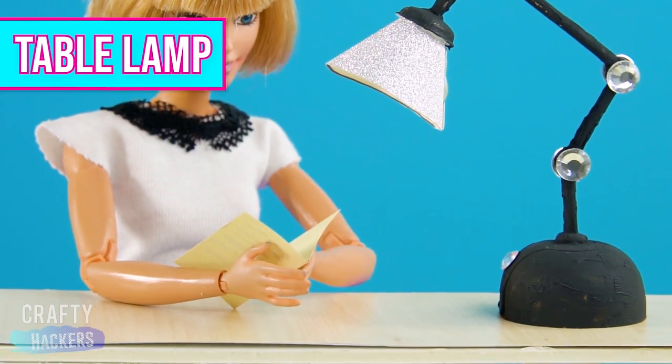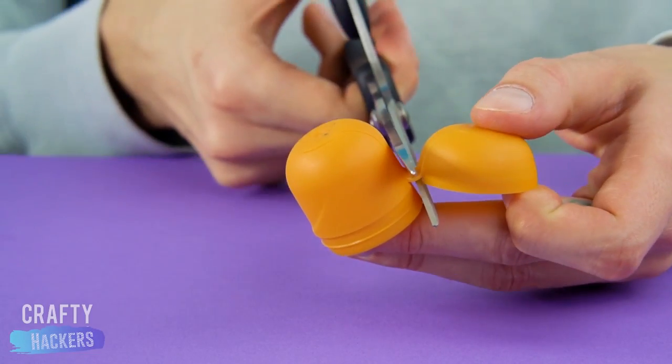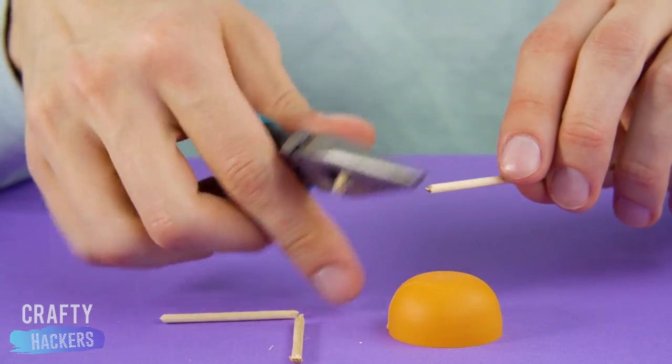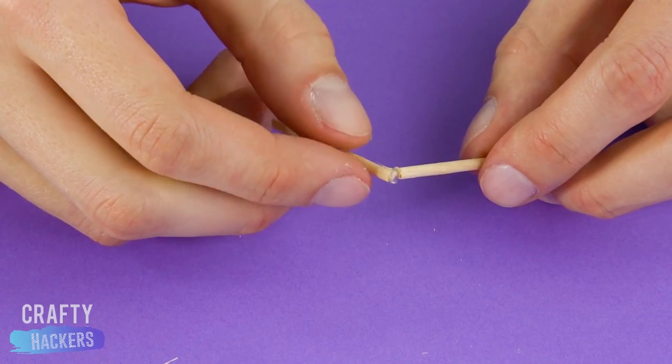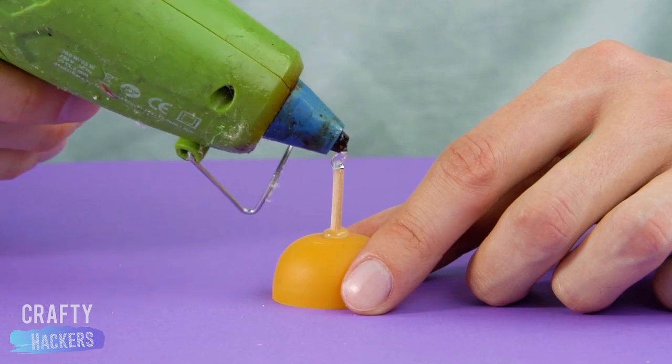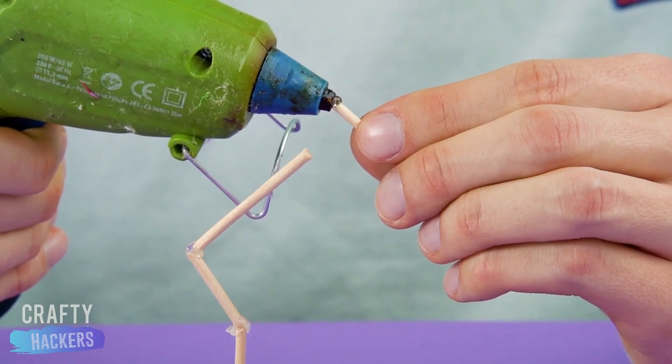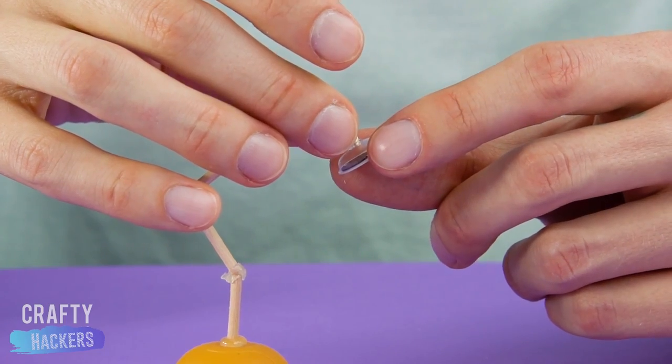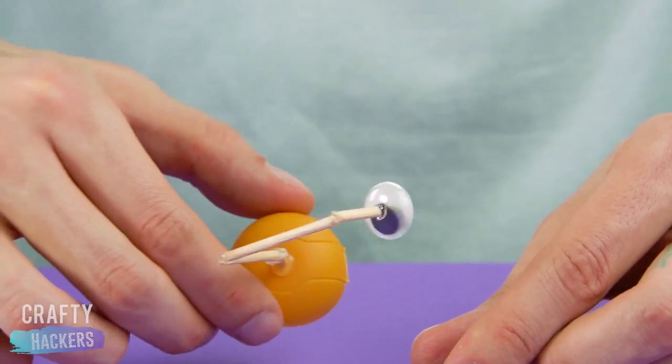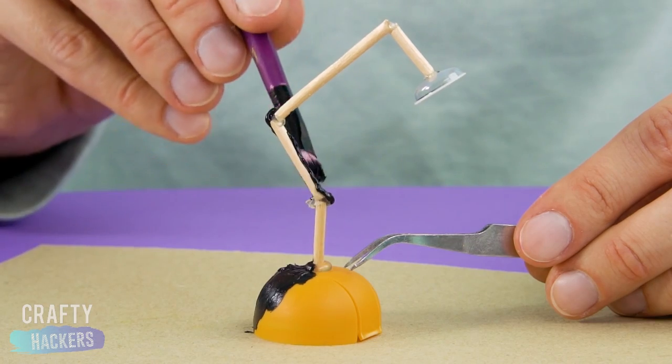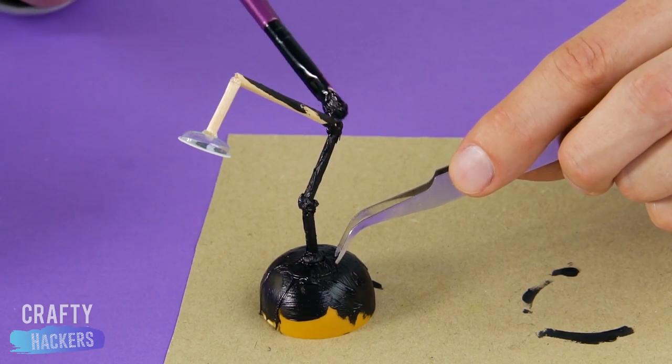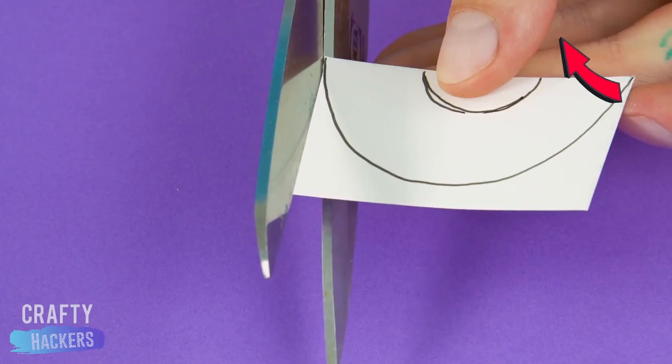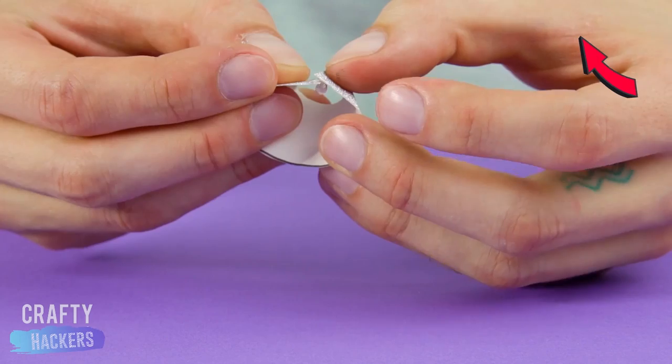Table lamp. Shine a light on Barbie's homework. All you need is a plastic egg, and a dowel. Clip a few pieces of the dowel with wire cutters. Glue a piece of the dowel to the end of the egg. Then, glue the other two pieces together. Glue them to the base, and add the last piece to the top. Glue a plastic googly eye to the end, like this. Paint the base of your lamp. Then, on a piece of glitter paper, trace and cut out the lampshade. Glue it together, and connect it to your lamp.